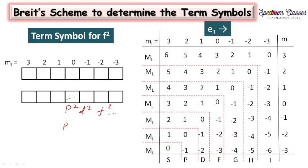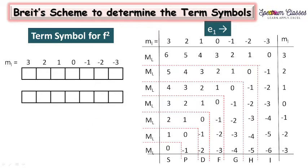Apart from p2, d2, and f2, we can also determine p4, d8, and f12 by using the holes method. The holes method is the method in which instead of two electrons we are having two holes. Now I will start with the configuration for this f2.